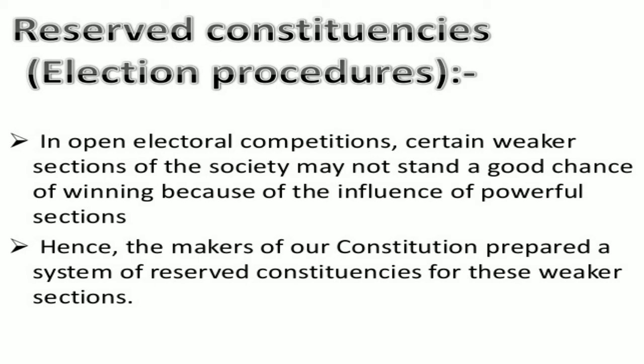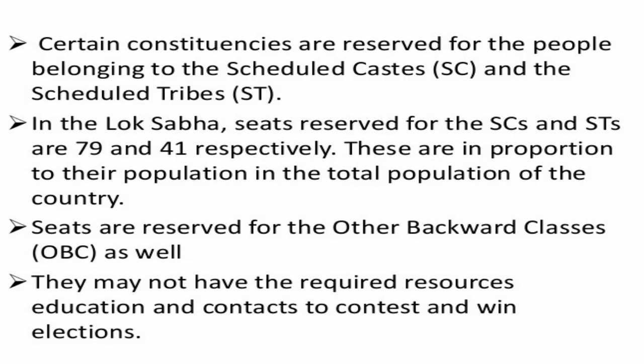Now let us talk about reserved constituencies and election procedures. In open electoral competitions, certain weaker sections of the society may not stand a good chance of winning because of the influence of powerful sections. Hence, the makers of our constitution prepared a system of reserved constituencies for these weaker sections. Certain constituencies are reserved for people belonging to the scheduled castes and scheduled tribes. In the Lok Sabha, seats reserved for SC and ST are 79 and 41 respectively, proportional to their population. Seats are also reserved for other backward classes, as they may not have the required resources, education, and contacts to contest and win elections.